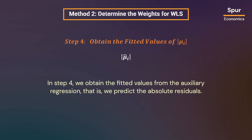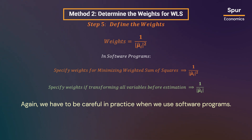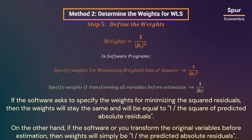In step 4, we obtain the fitted values from the auxiliary regression — that is, we predict the absolute residuals. Finally, in step 5, we decide the weights based on step 4. The weights will be equal to 1 over the square of fitted values, or predicted absolute residuals. Again, we have to be careful in practice when using software programs. If the software asks to specify weights for minimizing the weighted sum of squares, the weights will be 1 over the square of predicted absolute residuals. On the other hand, if the software or you transform the original variables before estimation, then the weights will simply be 1 divided by the predicted absolute residuals.